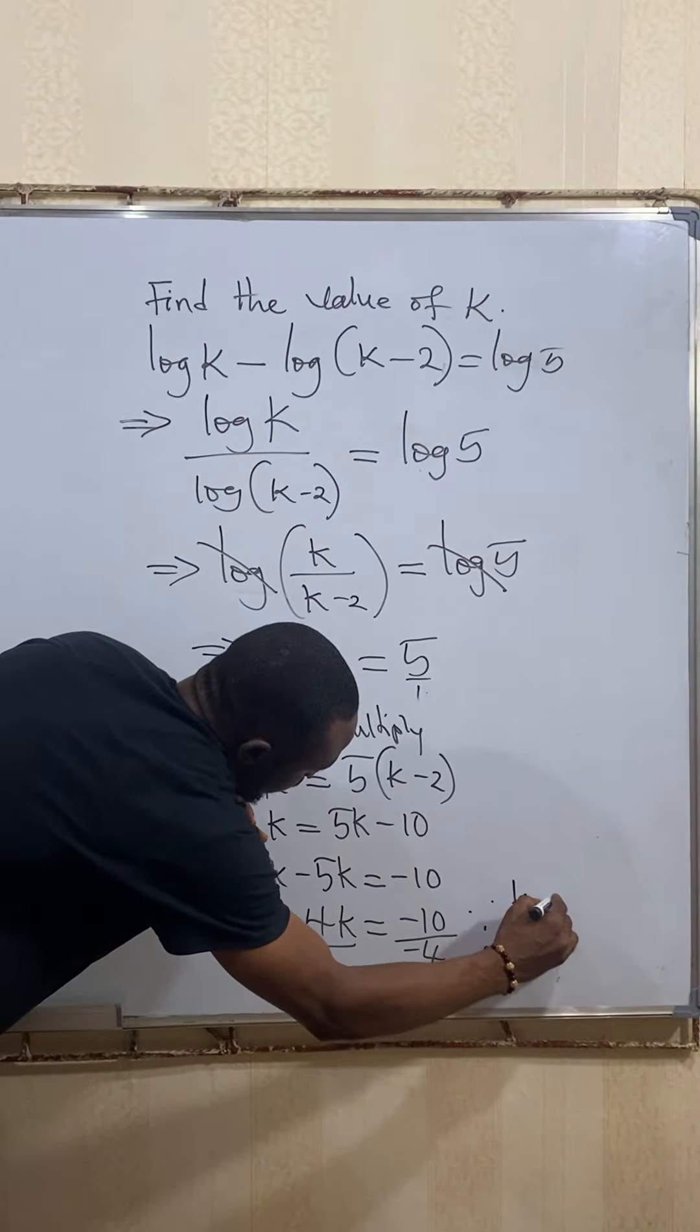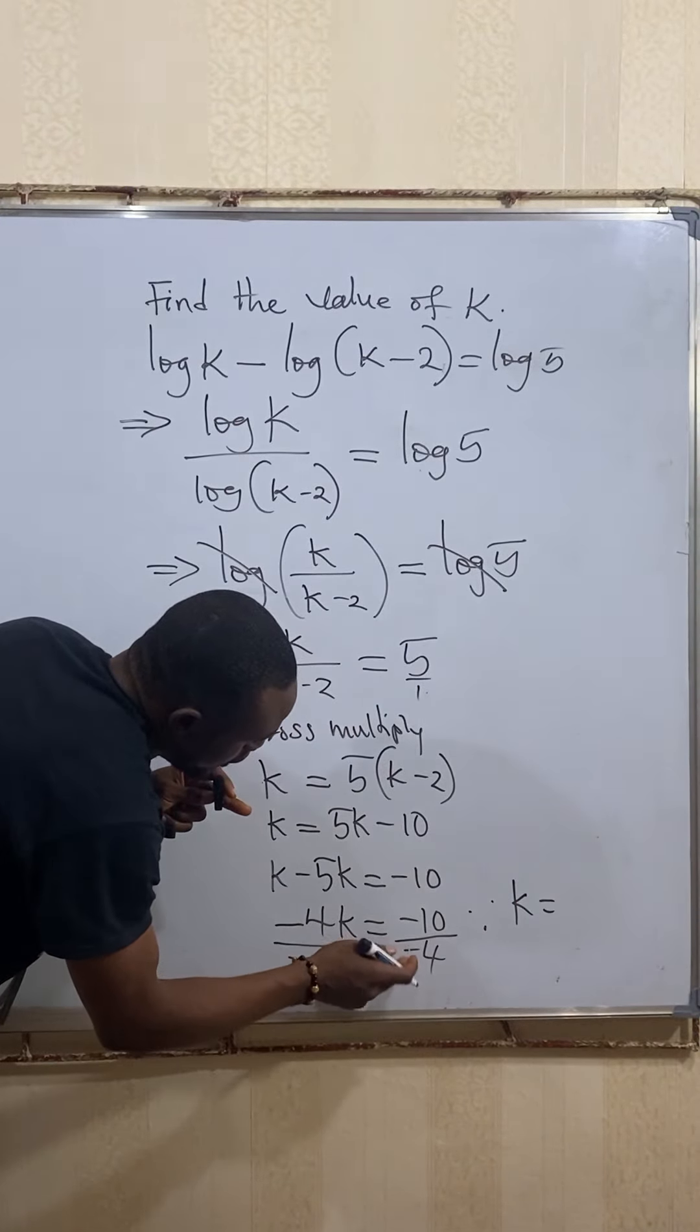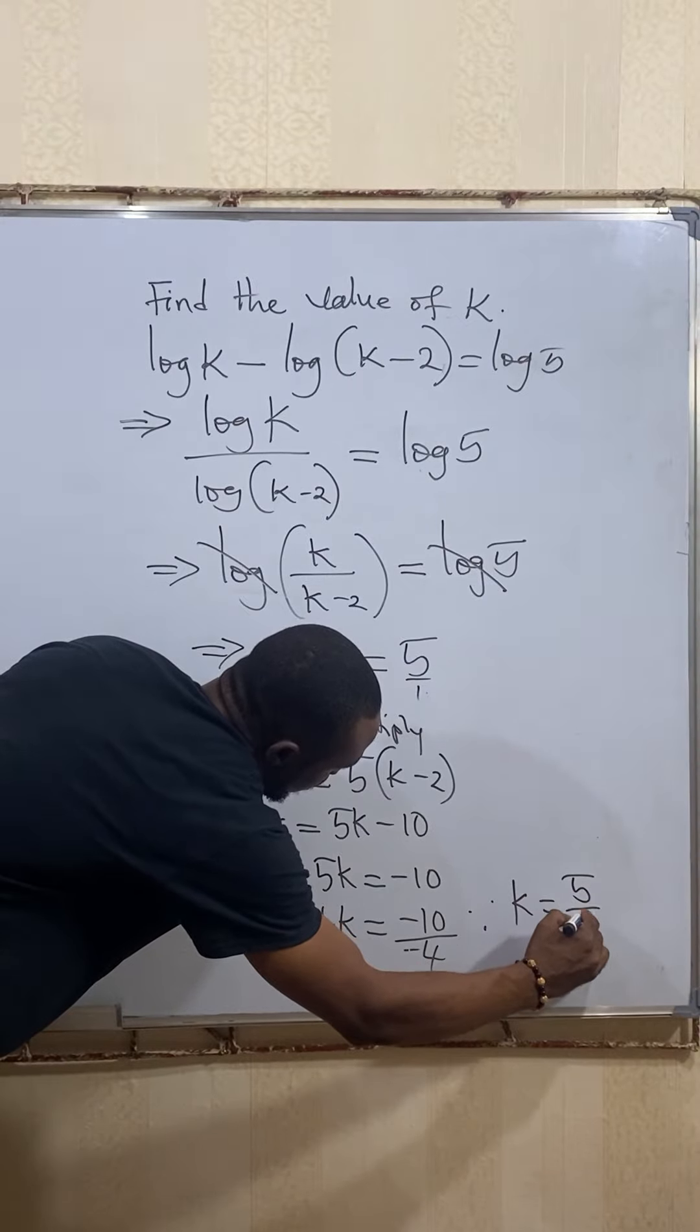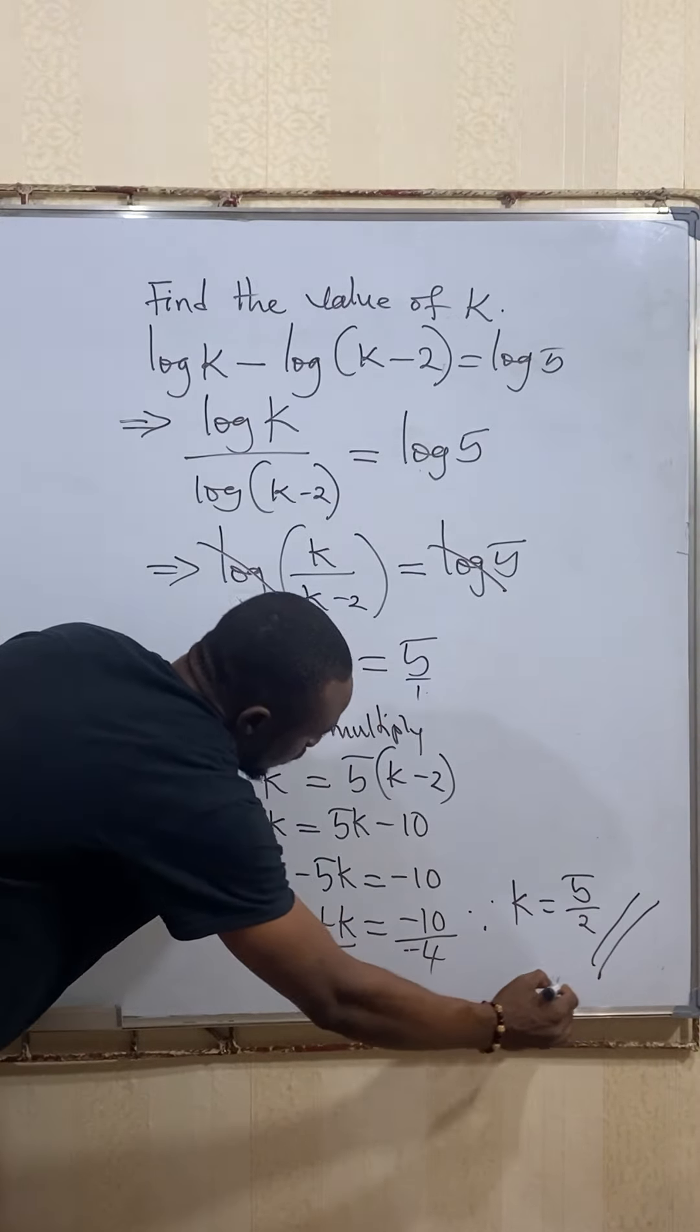So finally our k is equal to, if you divide here, you have 5 over 2 as our answer.